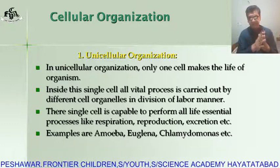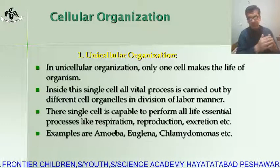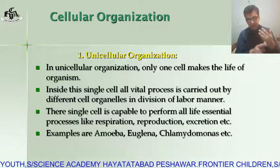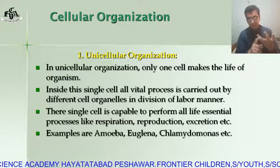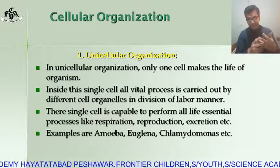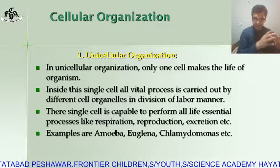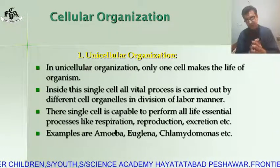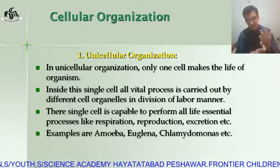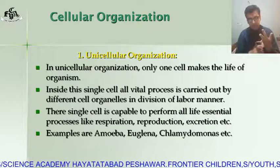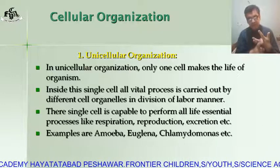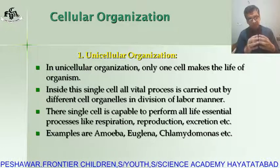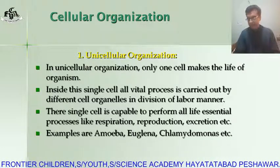In living organisms, the cell organizes in three ways to make the body of organisms. Cells make unicellular, colonial, and multicellular organization. The organisms formed through these organizations are called unicellular organisms, colonial organisms, and multicellular organisms respectively.